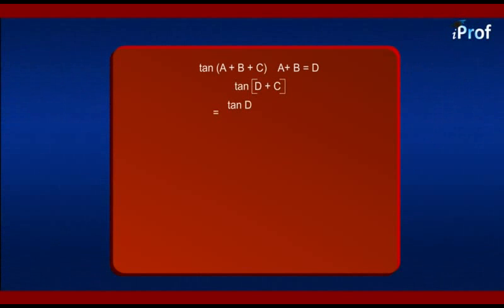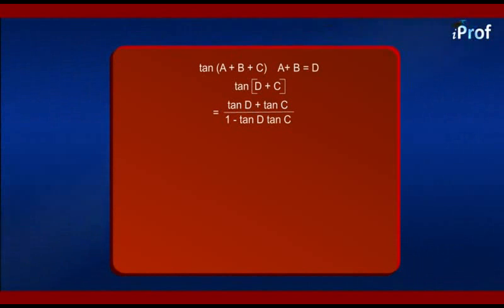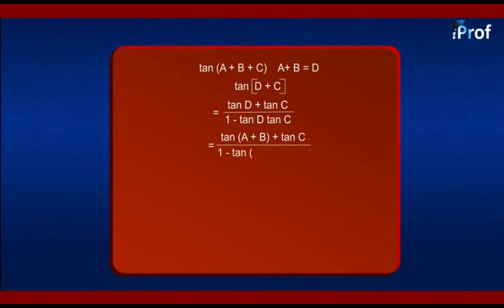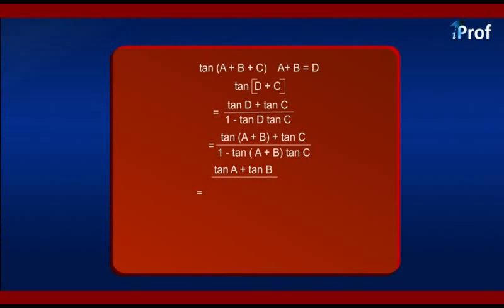Which is equal to tangent D plus tangent C divided by 1 minus tangent D tangent C. Putting back the values of D, which is tangent of A plus B, plus tangent C, whole divided by 1 minus tangent of A plus B into tangent C. Using the formula for tangent A plus B, we get tangent A plus tangent B upon 1 minus tangent A tangent B.